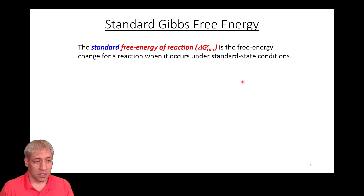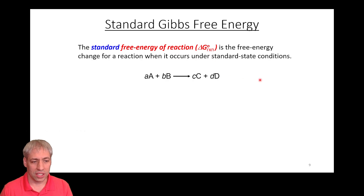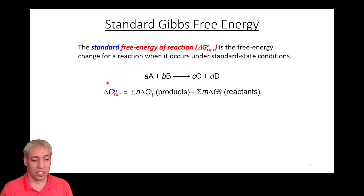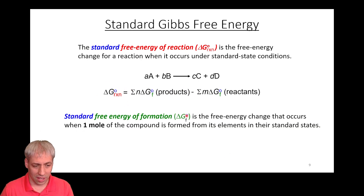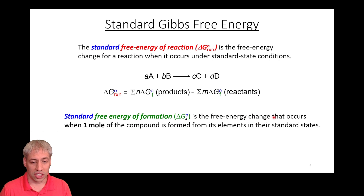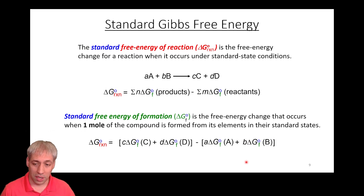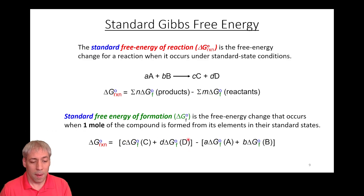Much like we did with enthalpy and entropy, we can calculate a standard free energy of reaction. We take the Gibbs free energy of formation of products minus reactants. The standard free energy of formation is the free energy change when one mole of a compound is formed from its elements in their standard state. So delta G reaction equals the sum of stoichiometry times delta G formation of products minus the same for reactants.